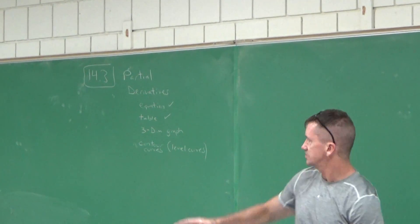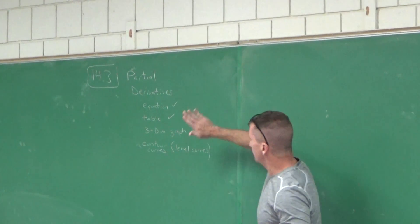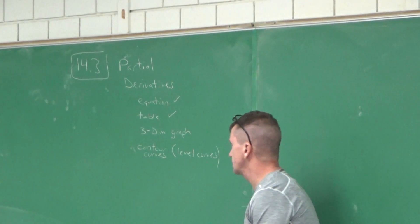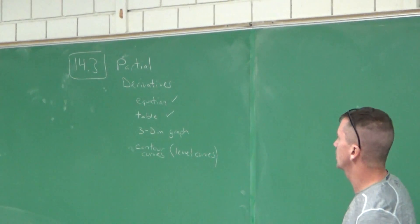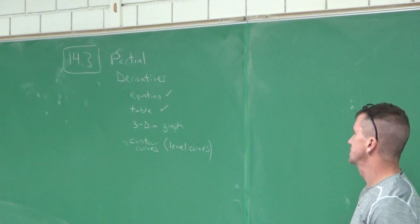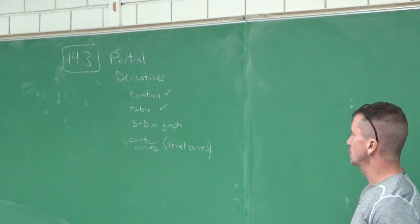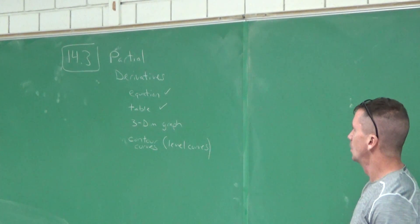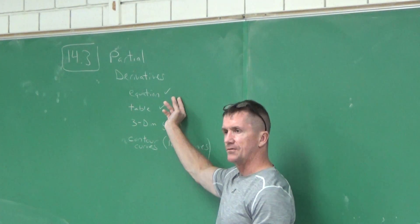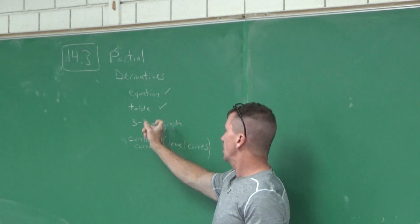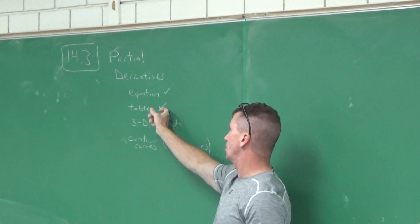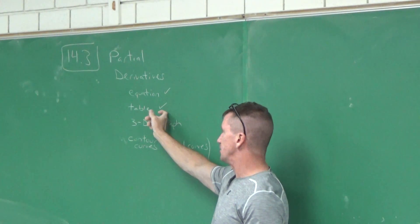Today we'll be doing section 14.3 on partial derivatives. We'll get to section 14.4 on tangent plane and tangent plane approximations. We've already talked about how to get a partial derivative from a contour map, and we also did a couple of problems where we took the partial derivative from a table.